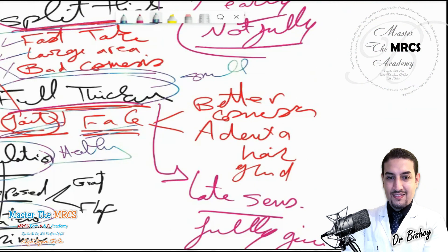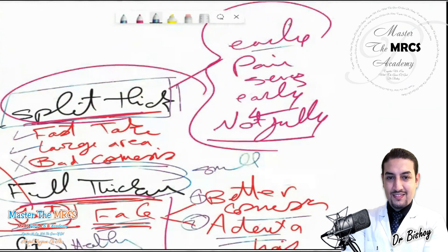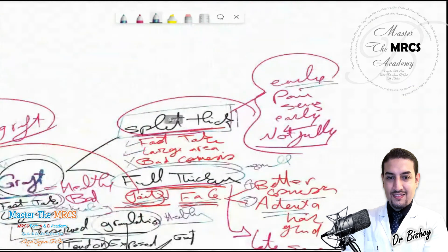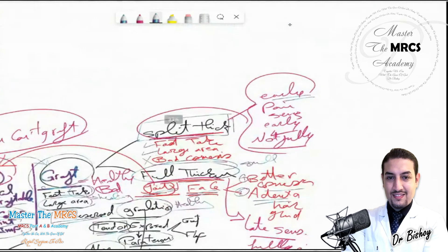So take care, the split thickness graft regains its sensation earlier, while the full thickness late. So whenever you can't graft, go for a flap. And this is simply the graft and the flap.